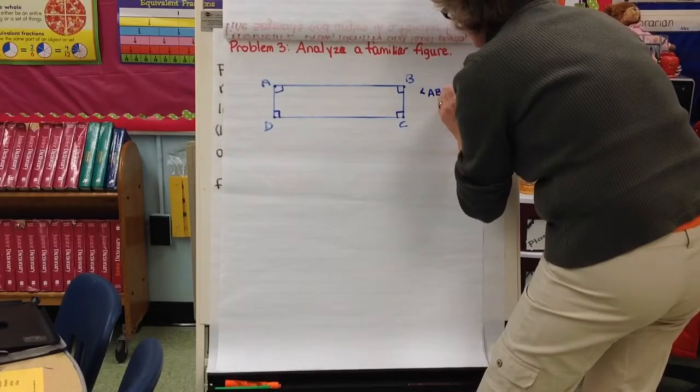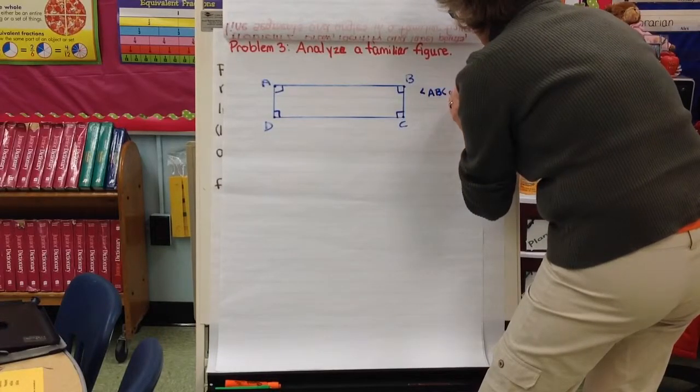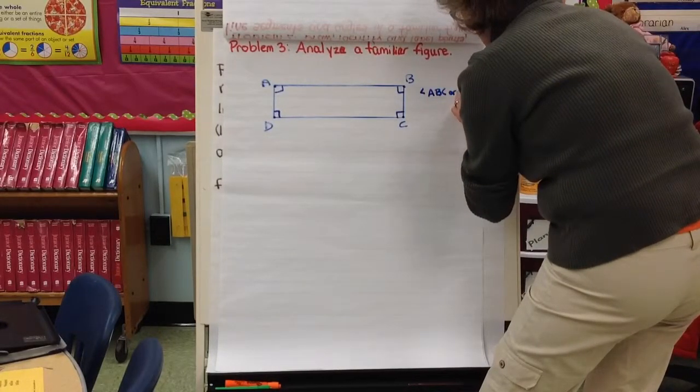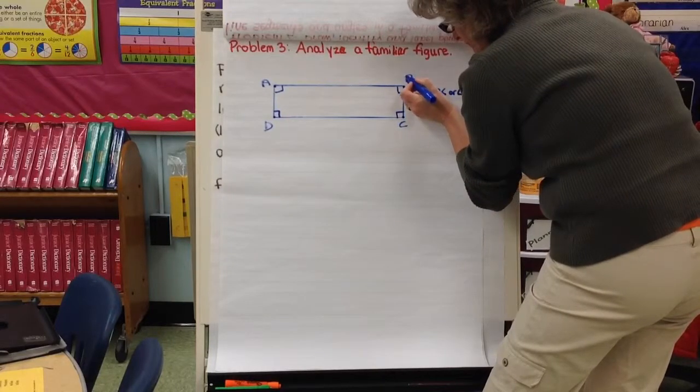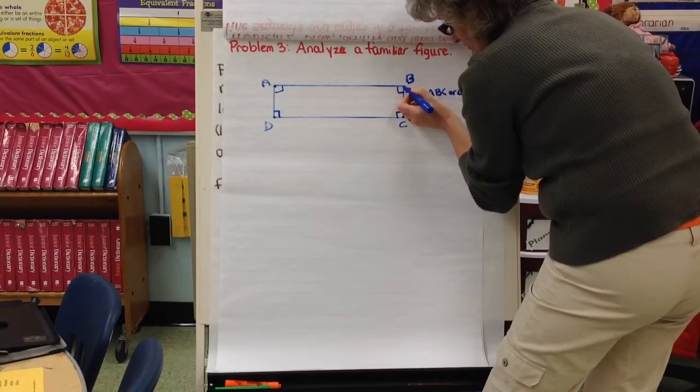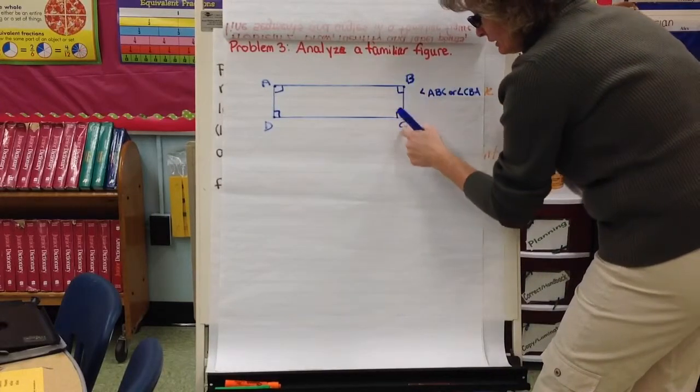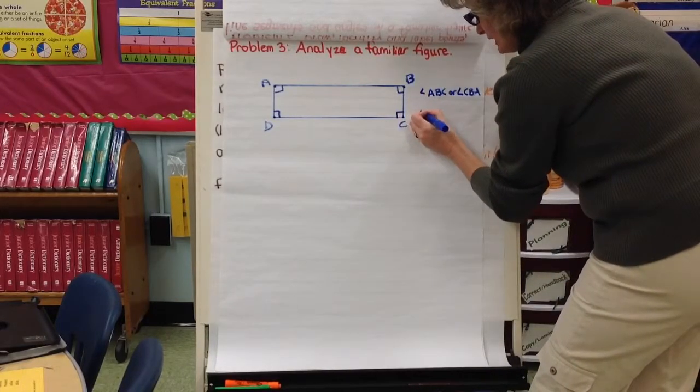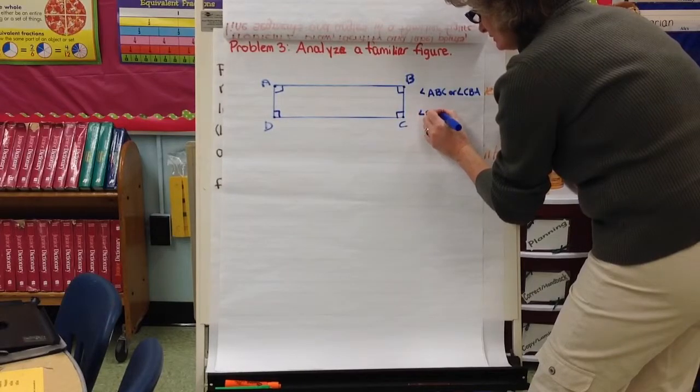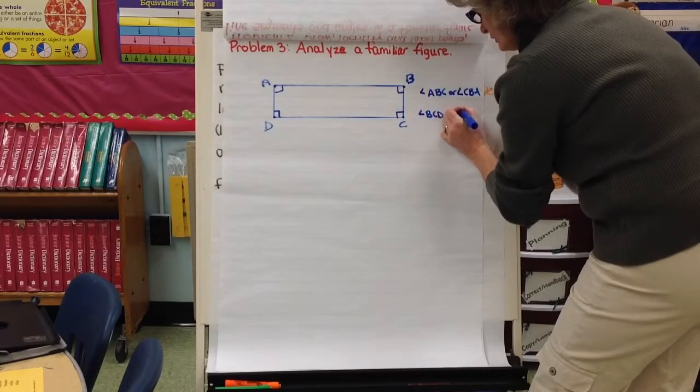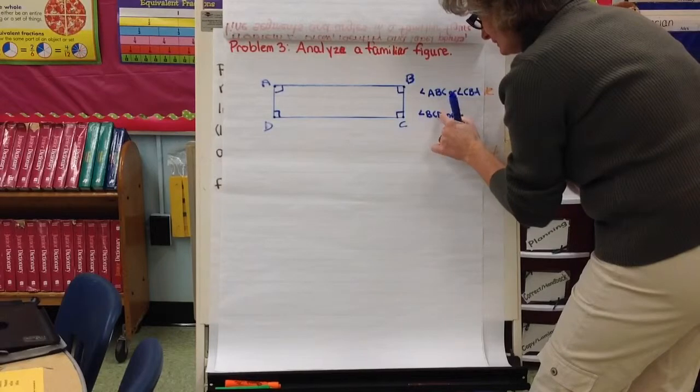We have angle A, B, C, or you could call it angle C, B, A. But the letter B has to be in the middle because this is the angle right here. We'll go ahead and name another angle. Right here we could name this one angle B, C, D. Or angle, you guessed it, D, C, B.